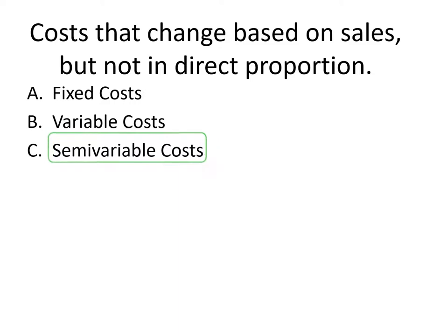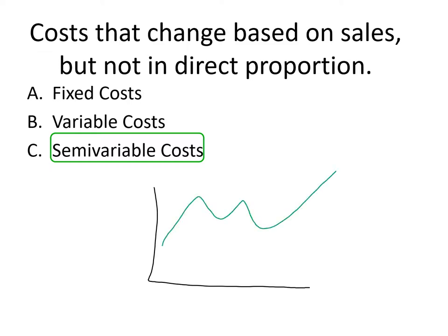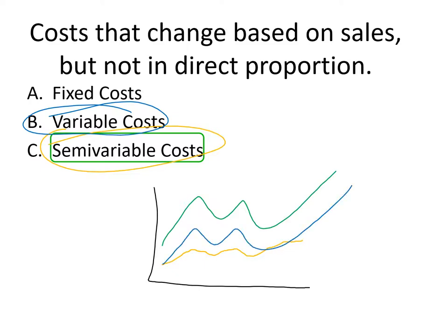Costs that change based on sales but not in direct proportion are semi-variable. On a graph, semi-variable costs go up and down a little but are not in direct proportion to sales. Truly variable costs, if graphed, will mirror sales in direct proportion.